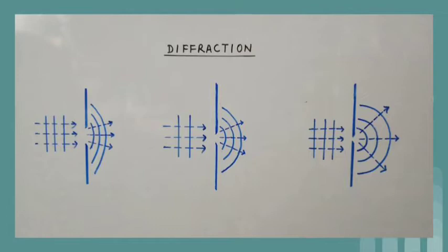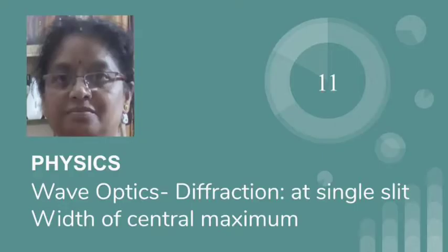Diffraction is not common in the case of light waves, as visible light has a very small wavelength of the order of 10 to the power minus 6 meters, and obstacles or apertures of this size are not easily available.